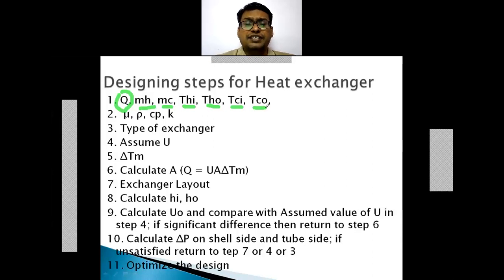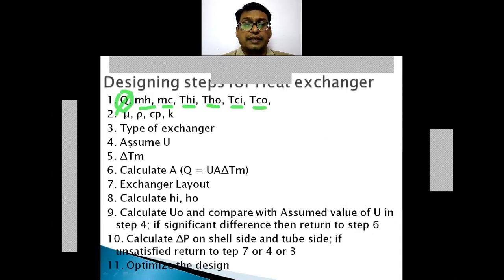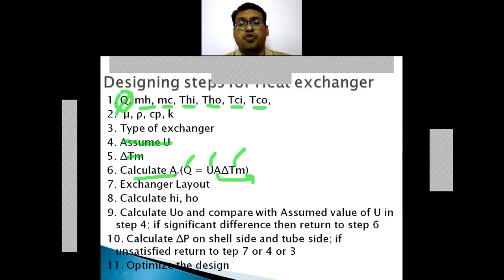The next step is to calculate the mean temperature difference — the log mean temperature difference — and apply a correction factor to get the corrected mean temperature difference ΔT_m. Then calculate the required heat transfer area. Since Q was calculated in step one, and we assumed U and calculated ΔT_m, the required area A can now be determined from Q = U × A × ΔT_m.